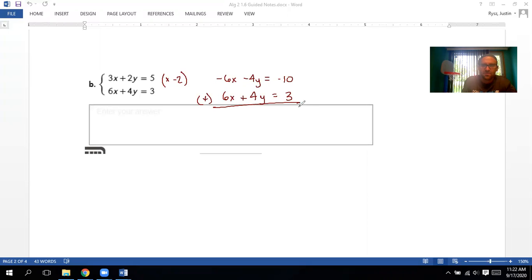When we add them together, something weird happens. Negative 6x plus 6x goes away. Negative 4y plus 4y goes away and we get nothing equals negative seven. So sometimes with systems of equations, you can have answers that don't work. It's just possible here that this line will never cross that line, and so we have no solution.